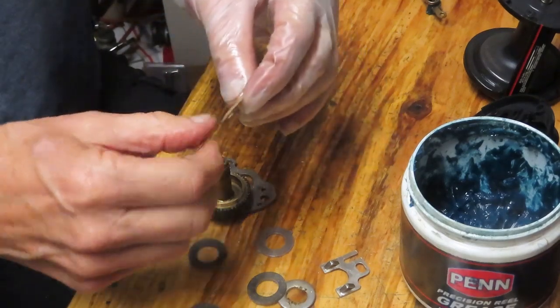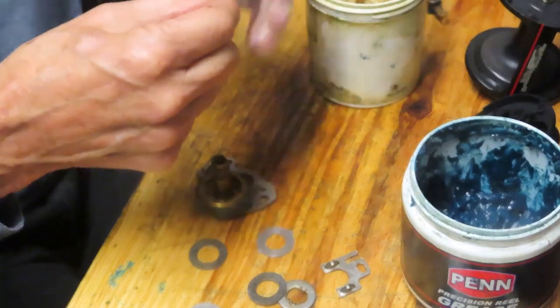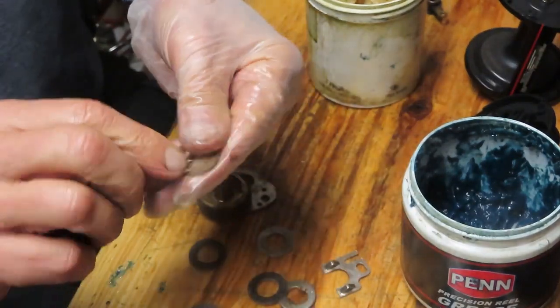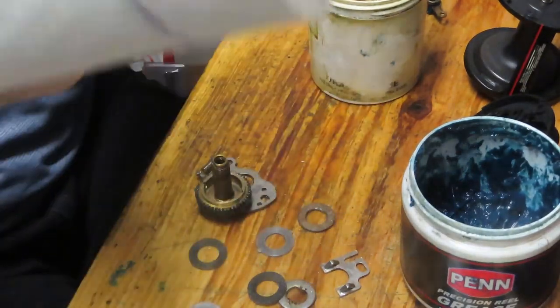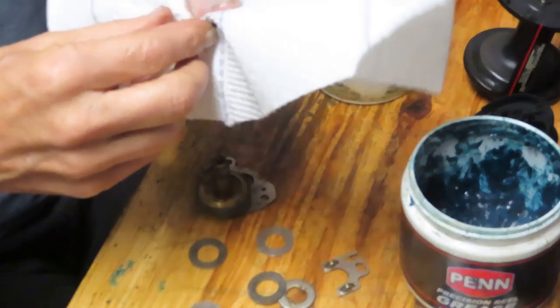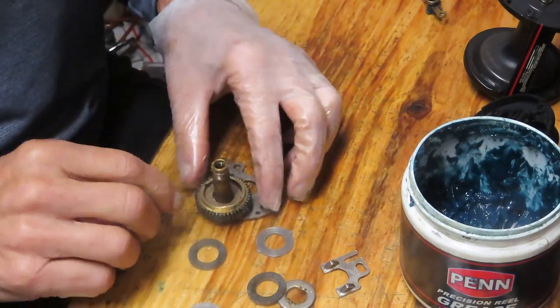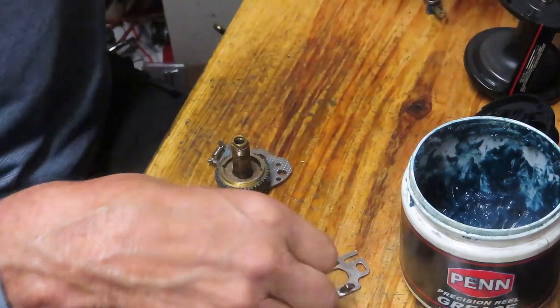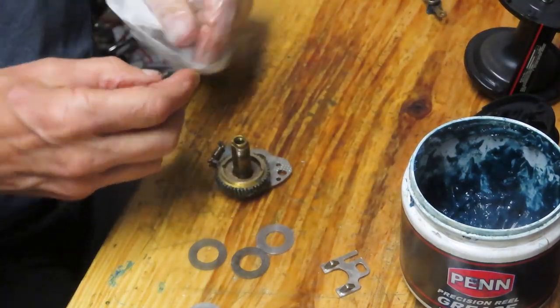Back on with the main gear. Here's the new washer. We're going to coat that with grease. I'm going to use Cal's Drag Grease for this. If you don't have Cal's Drag Grease, don't run out and get it. Any reel grease will do. The idea here is that you want to keep these from drying out and breaking. To do that, the grease will fill the pores.